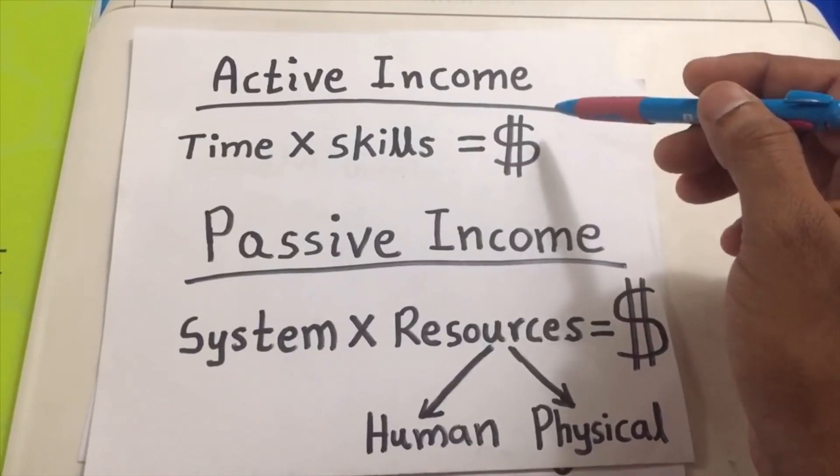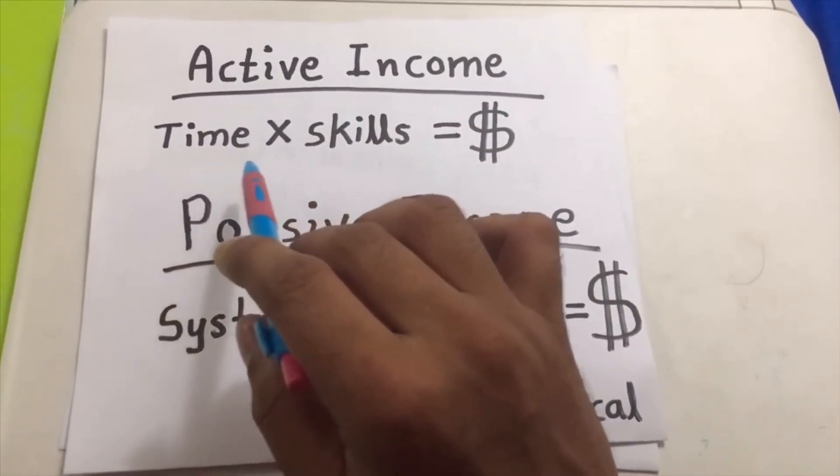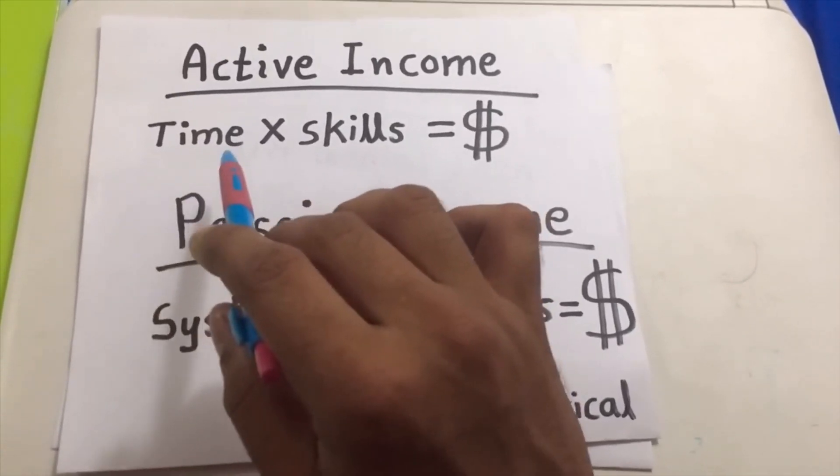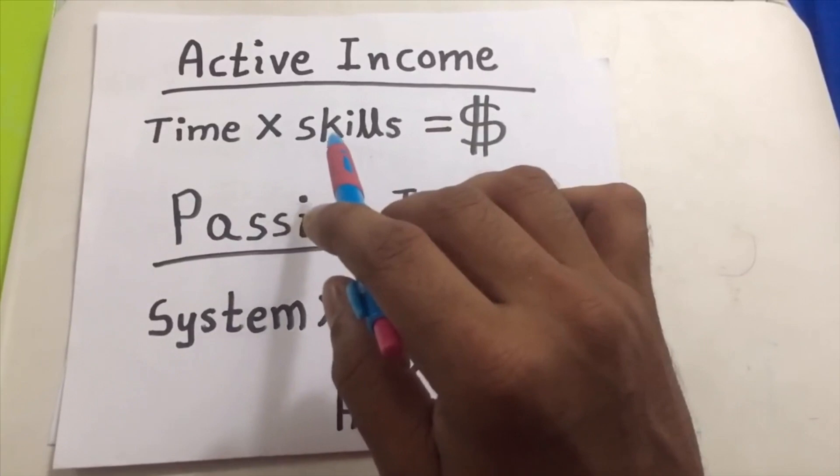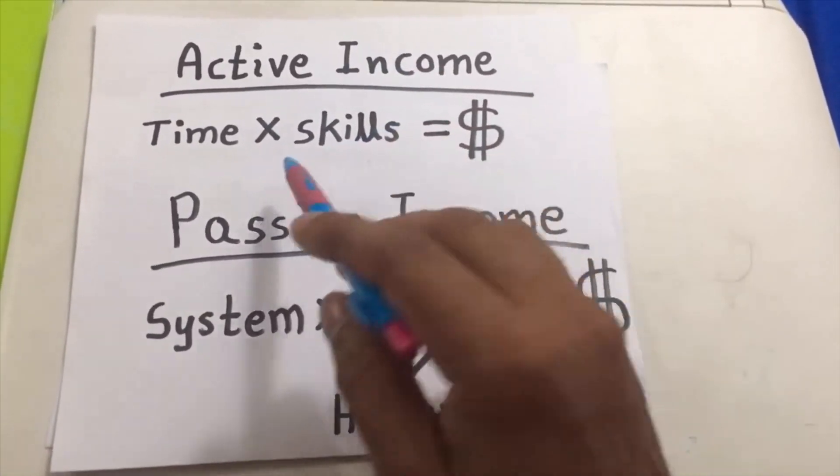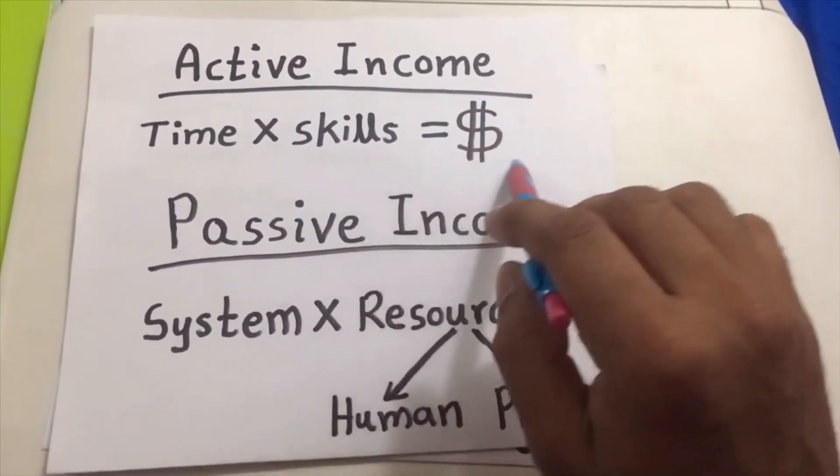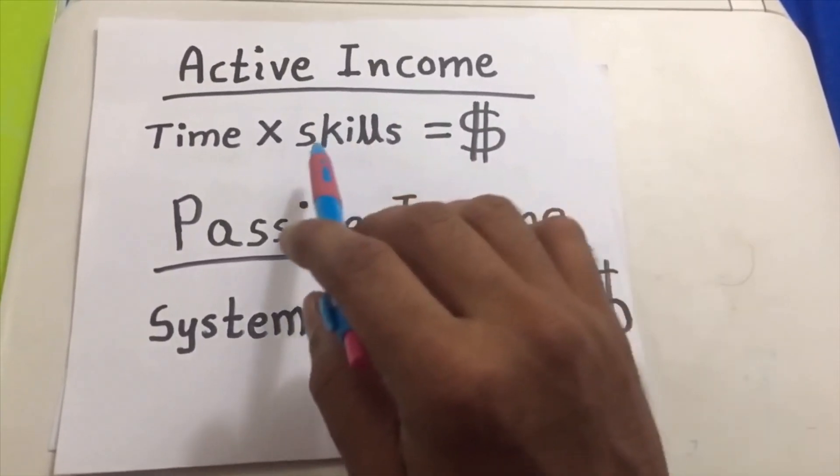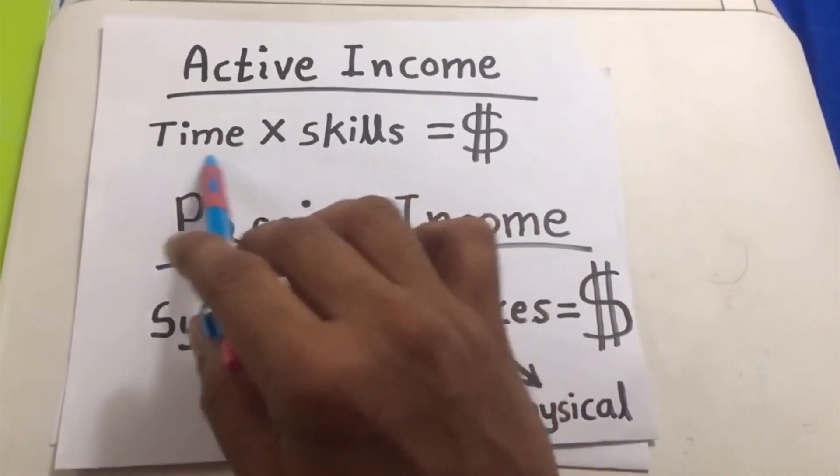This is a salary, a monthly wage. By increasing the time, which means working overtime, you can increase your salary. And by studying more or getting more experience, by studying a master or a PhD, or getting some related skills through training, you can also increase your salary.